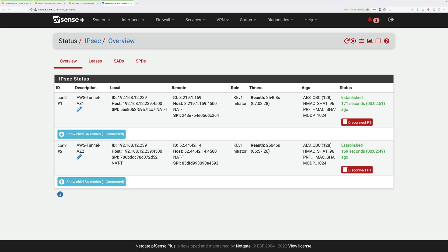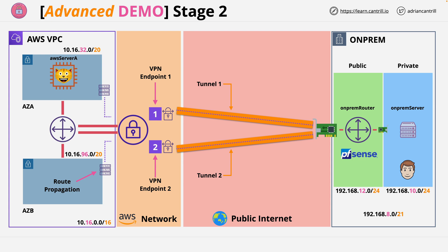Welcome back to stage 3 of this mini-project. As a reminder, this is the architecture that you've implemented to this stage. You have two environments — AWS on the left and the simulated on-premises environment on the right — and you've successfully configured two VPN tunnels from the on-premises environment to each of endpoint 1 and 2 at the AWS side. This infrastructure, from a VPN perspective, is operational.